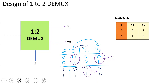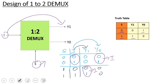The select line S controls which output is active — I doesn't independently change which output is selected, S does. When S equals 0, Y0 equals I. When S equals 1, Y1 equals I and Y0 equals 0. So the Boolean expressions are: Y1 equals S AND I, and Y0 equals S-bar AND I.